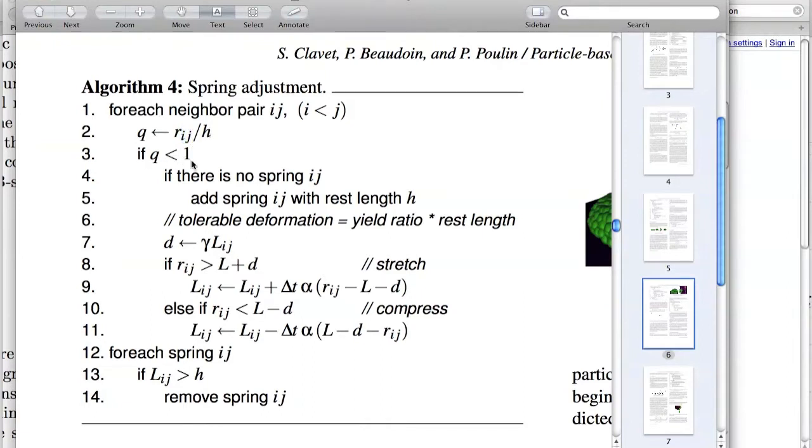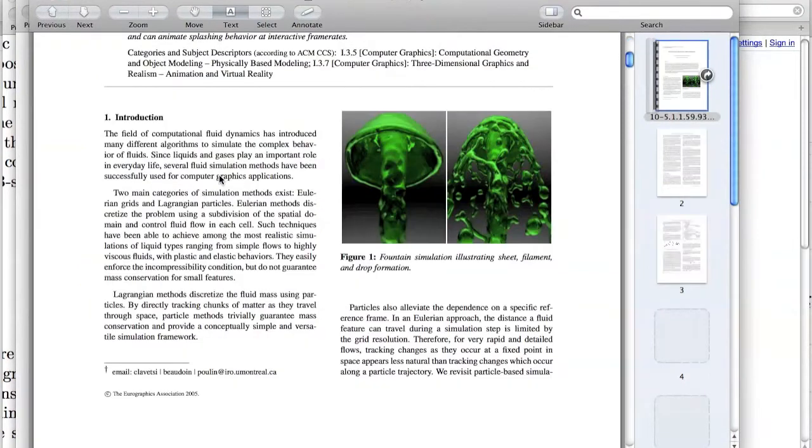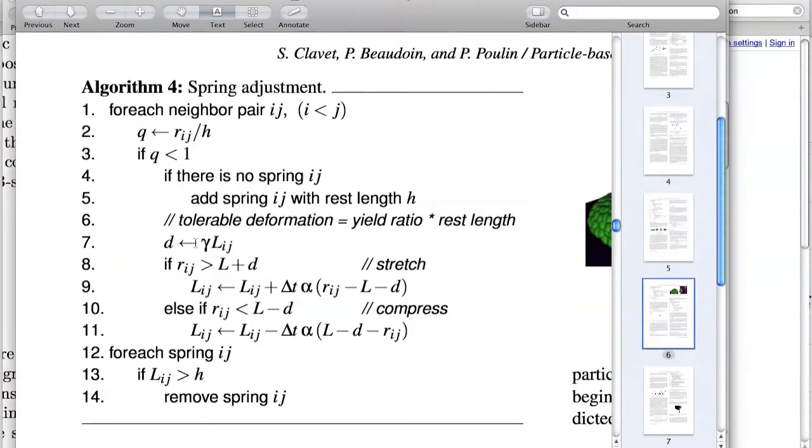And if q is less than 1 and there's no spring ij, add a spring ij with rest length h. So this spring creation code basically works pretty well. It adds a spring whenever the distance between the two particles is less than the kernel radius. However, I was noticing that springs never got deleted.